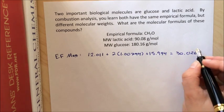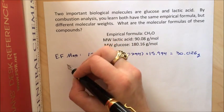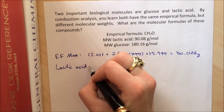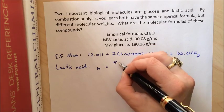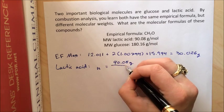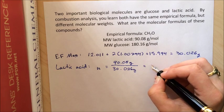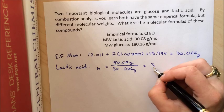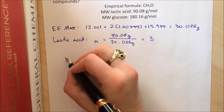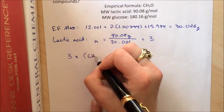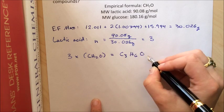Now all we have to do is figure out how many times this mass goes into each of the molecular masses to get our n's. We'll start with lactic acid. So n equals the molecular weight, in this case 90.08 grams, over the empirical formula unit weight. So it's going to be over the 30.026 grams. We crunch that and we get 3. So we're going to multiply all of the subscripts in the empirical formula unit by 3 to get the formula of lactic acid. So we do that and we get C3H6O3.